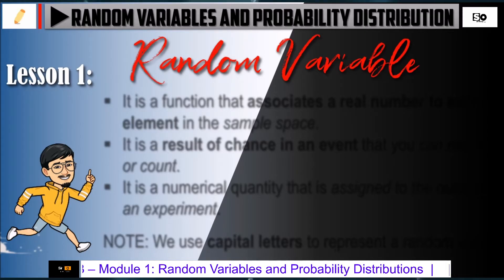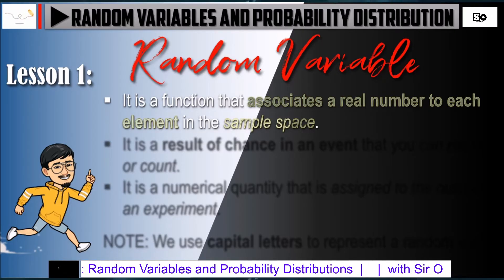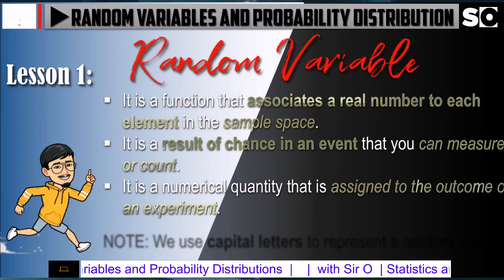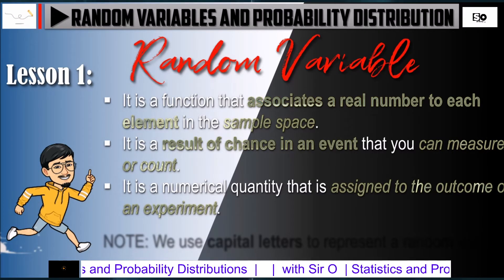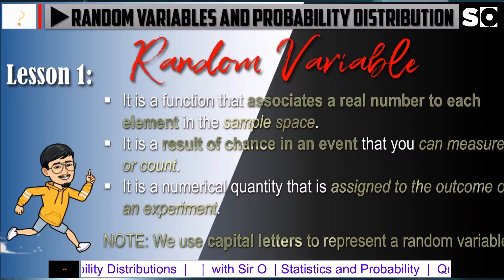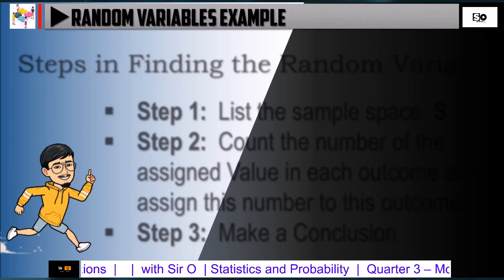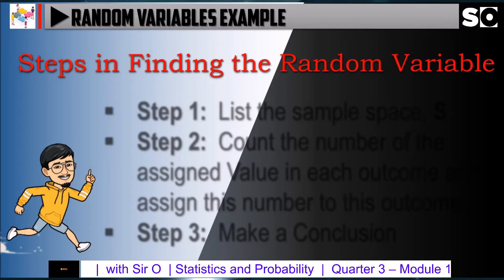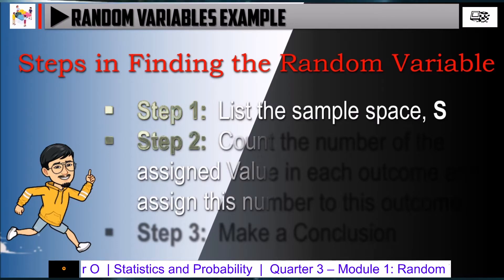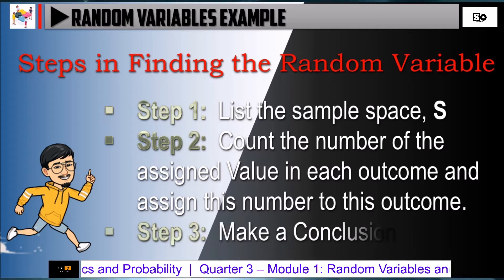Lesson 1: Random Variable. It is a function that associates a real number to each element in the sample space. It is a result of chance in an event that you can measure or count. It is a numerical quantity that is assigned to the outcome of an experiment. Note that we will use capital letters to represent a random variable. Here are the steps in finding the random variable: Step 1, list the sample space; Step 2, count the number of the assigned value in each outcome and assign this number to that outcome; Step 3, make a conclusion.